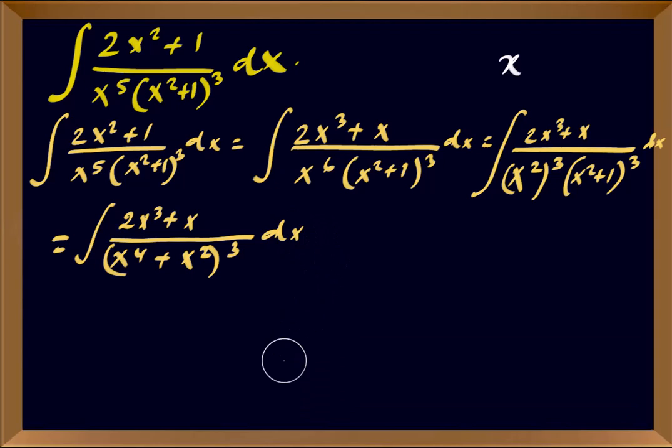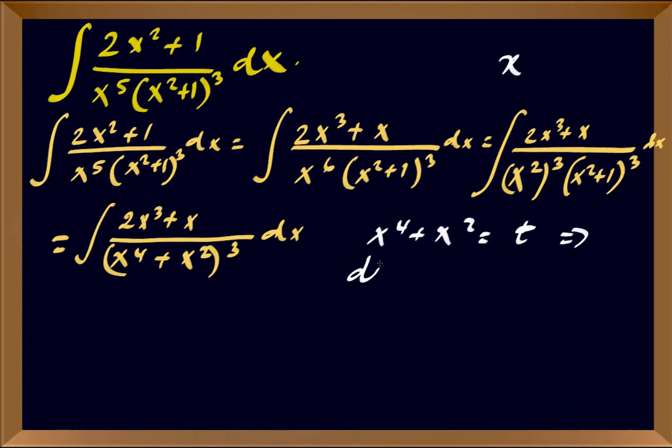Now, if we take the derivative of the quantity (x⁴ + x²) cubed in the denominator, we set t = x⁴ + x². Then dt = (4x³ + 2x) dx. Unfortunately we only have (2x³ + x) in the numerator.